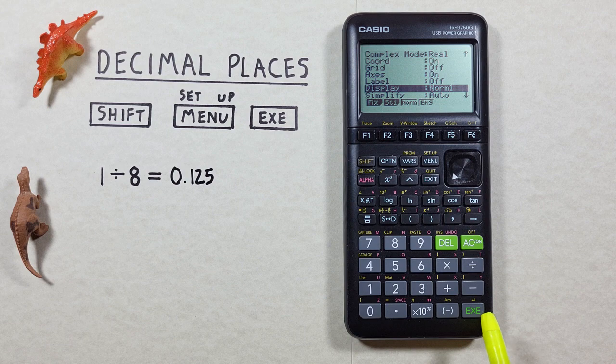There we go we see norm 1 now and we can exit out of this menu with the exe, and now again if we do our 1 divided by 8 we see we're back to getting all our decimal places.